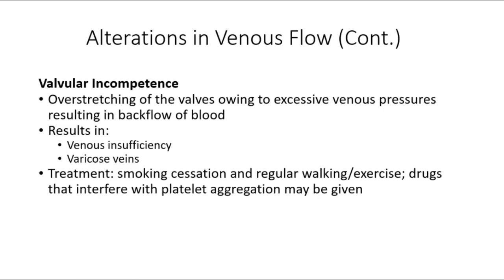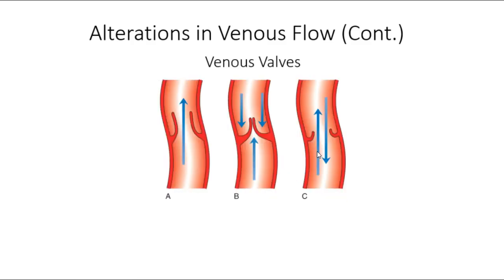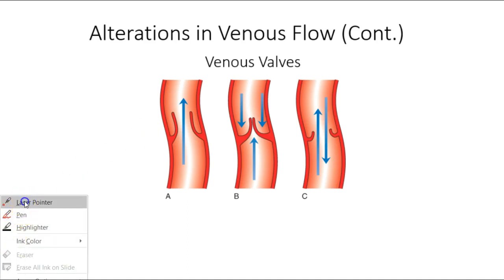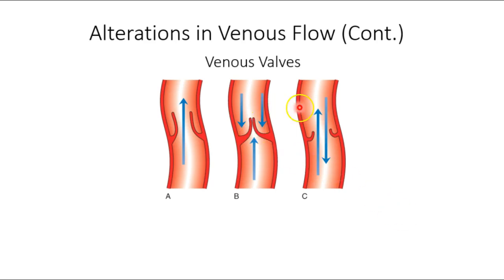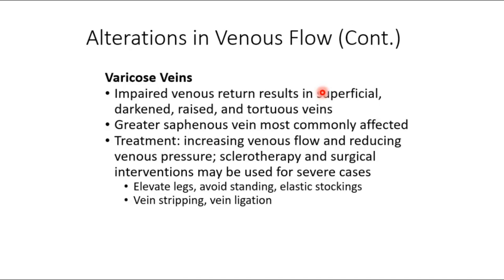With aging or a sedentary lifestyle, those valves can become problematic. They're actually pretty delicate — they're derived from the endothelium, from that tunica intima. With age, they can become incompetent or weaken, and if they weaken or become insufficient, blood will not be squeezed progressively toward the heart as easily.